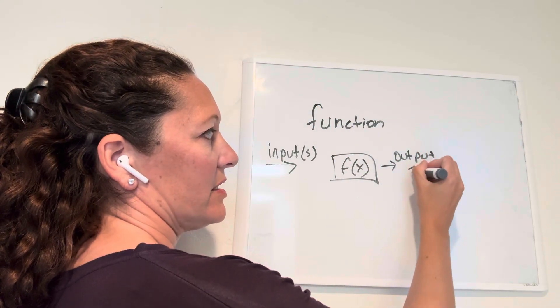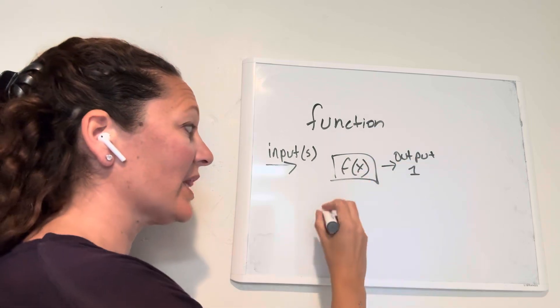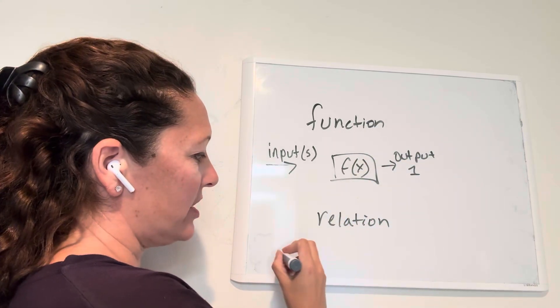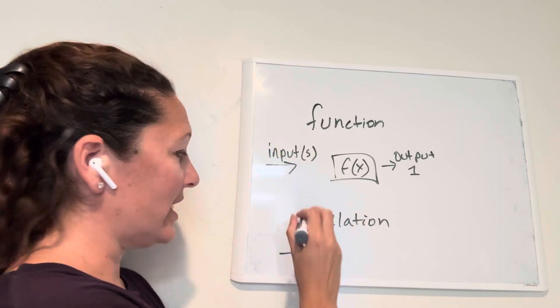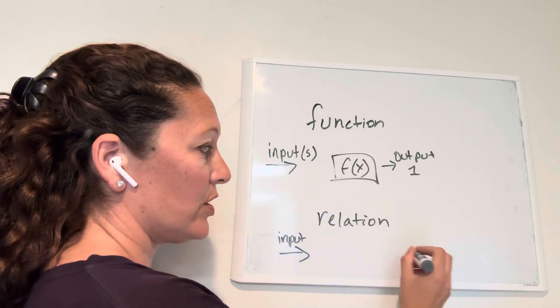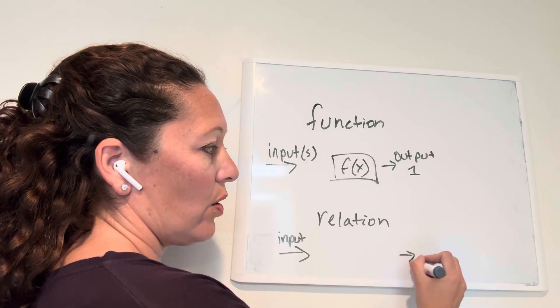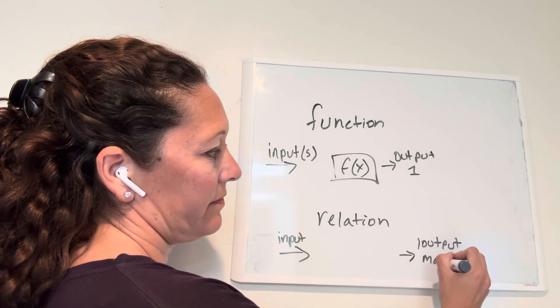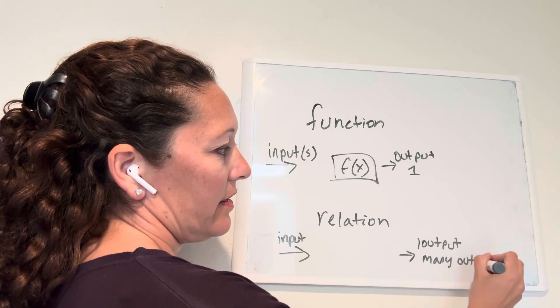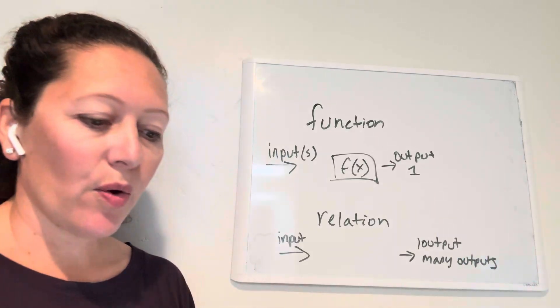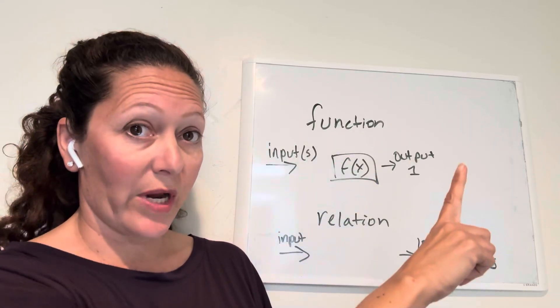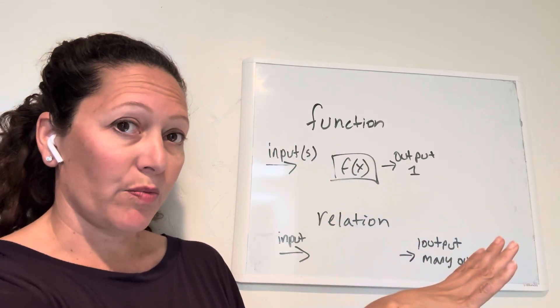This has to be singular, one output. Versus relation works differently. Relation is where you only have one input, but you can end up having one output or many outputs. That's the key point: function will only have one output, relation can have multiple outputs.